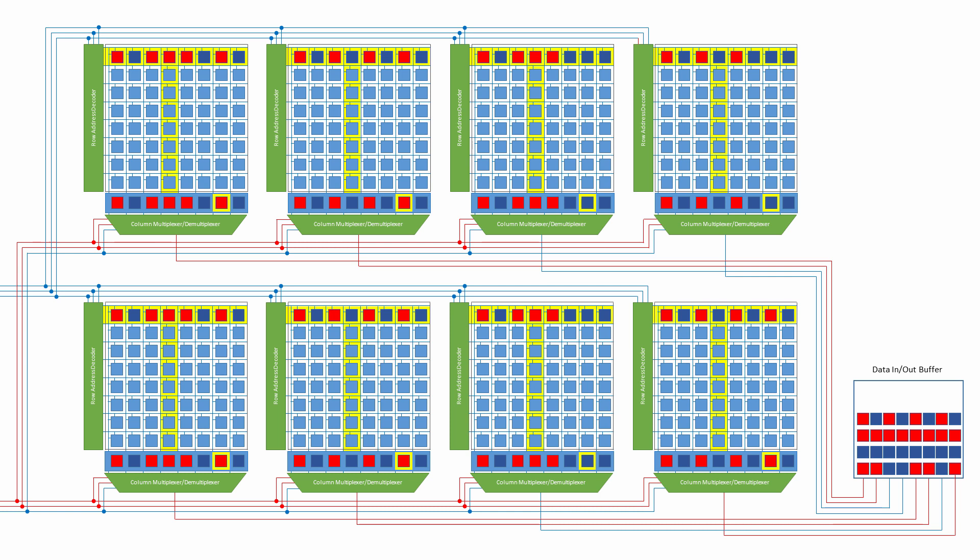Different generations of DRAM have different burst lengths: typically DDR2 has a burst length of 4, DDR3 has a burst length of 8, and DDR4 has a burst length of 16. In reality, a DDR3 DRAM module will have a bank in each of 8 chips working simultaneously to deliver 8 64-bit words in very close succession. This technique is called pre-fetching.